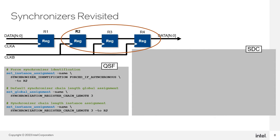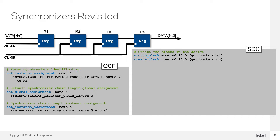The synchronizer register chain exists in the default settings with an assignment of 3, meaning any synchronizer chain has a global default length of 3. The synchronizer register chain length is a local assignment attached to a specific node, and this local assignment will override any default or non-default global assignment. The clock constraints demonstrate the two clock domains. The set_false_path SDC command tells Timing Analyzer and subsequently the fitter not to consider paths from clock domain A to clock domain B. Once the constraint is in place, the fitter can make the paths as long or as short as it needs to. This can cause skew problems with a bus, and the set_max_skew SDC command is the constraint needed for such a situation.